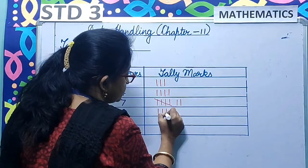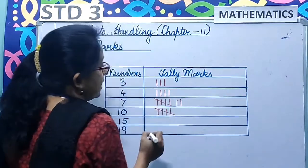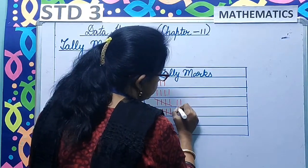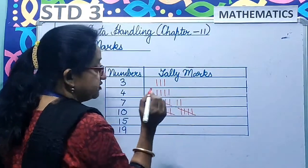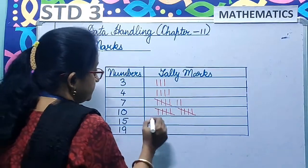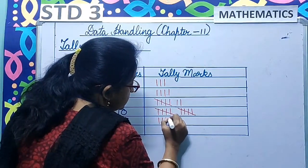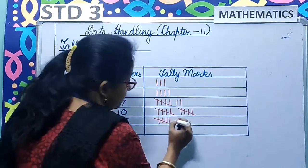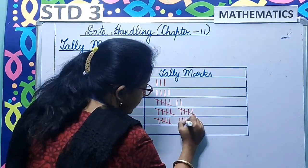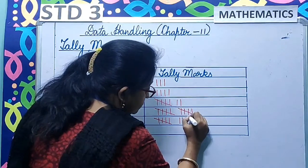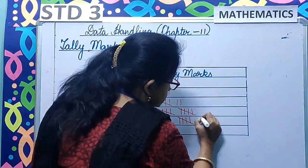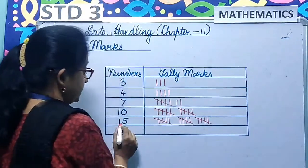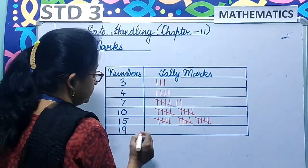The next number is 10. So 1, 2, 3, 4, and 5 — a group of 5. Again 1, 2, 3, 4, and again a group of 5. So 5 plus 5 makes it 10. Next number is 15: 1, 2, 3, 4, and 5 — group of 5. Then another group of 5, and another group of 5. So 5 plus 5 plus 5 makes it 15.